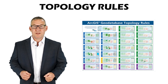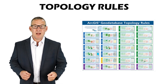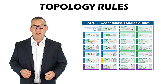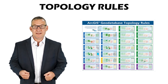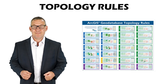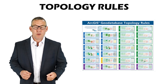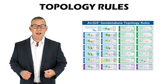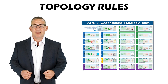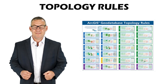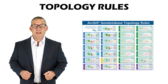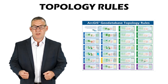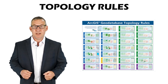Topology Rules: Topological rules model spatial relationships between features or between feature classes. The most popular program for modeling topological relationships in GIS is the ArcGIS geodatabase. These are the standard topological rules used in a geodatabase.